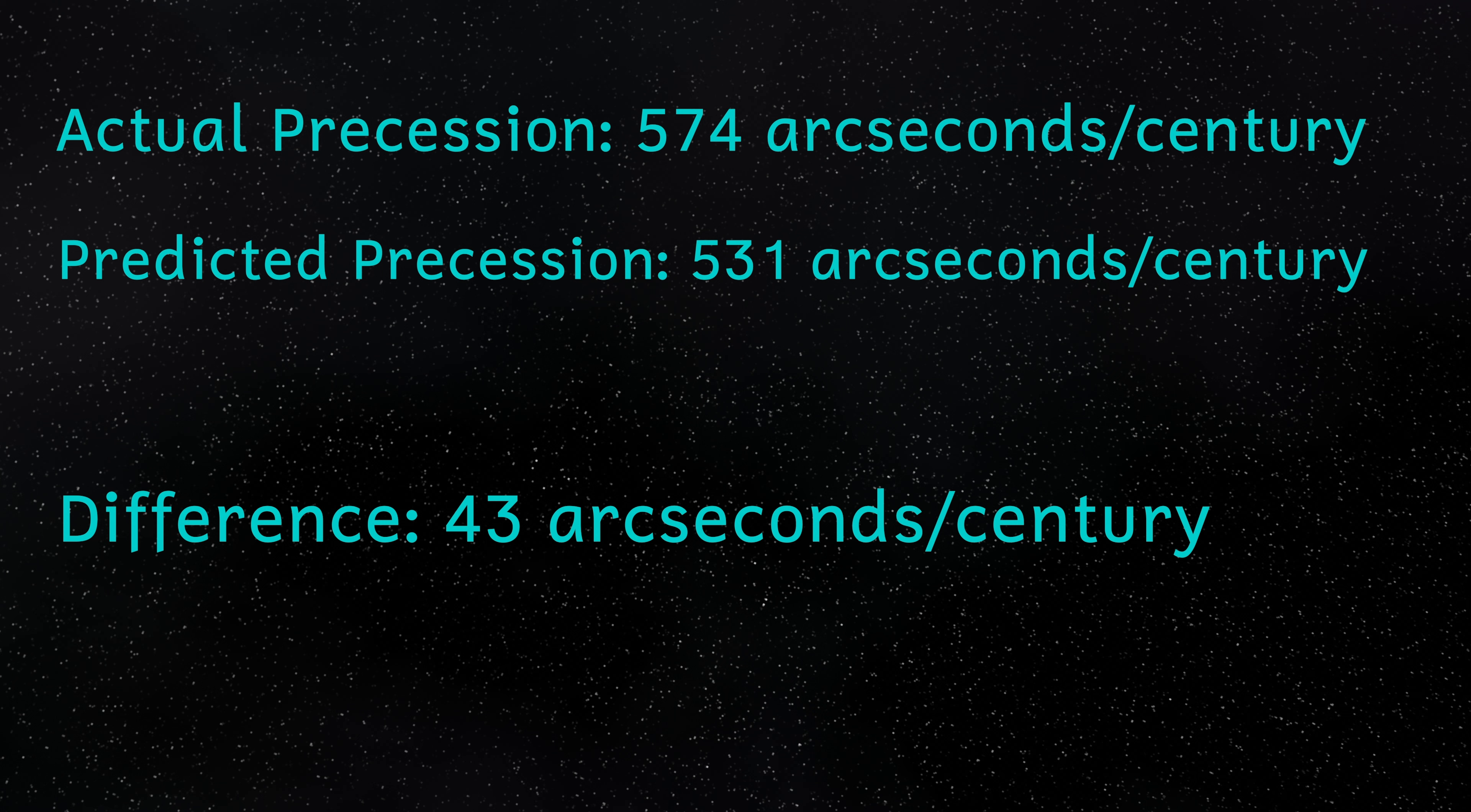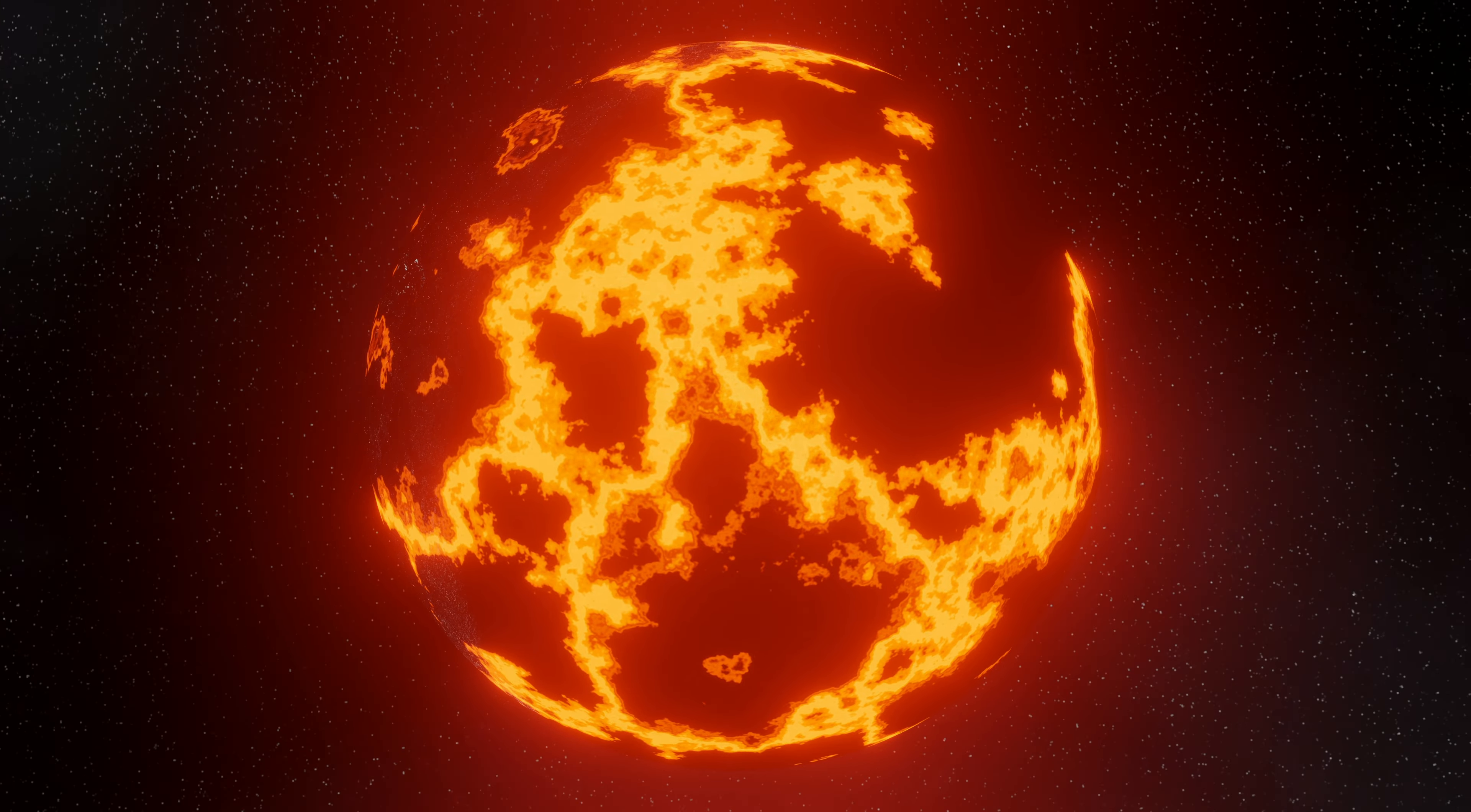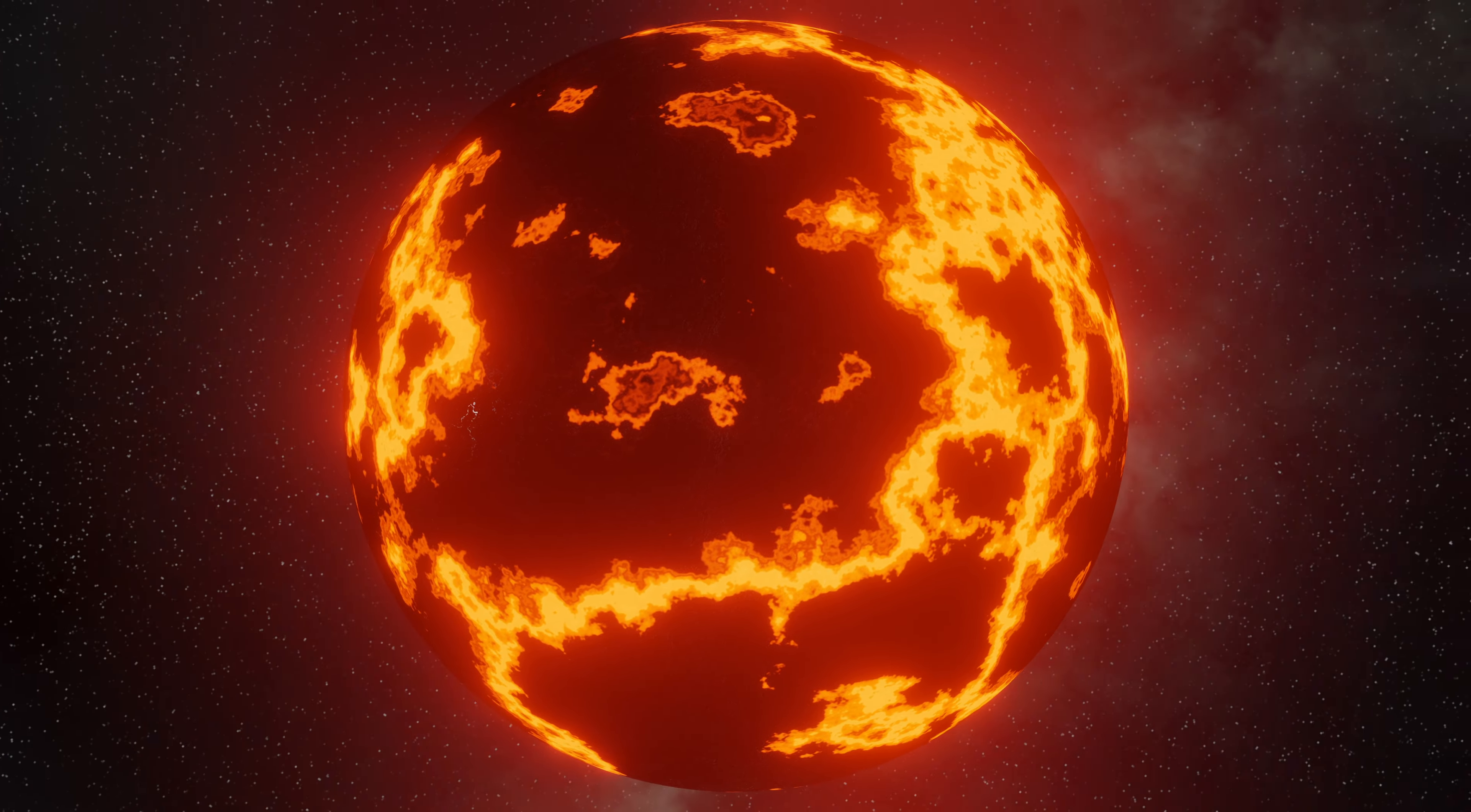Now that might not seem like a lot, but the discrepancies should be very close to zero. A number of different fixes were suggested for this discrepancy, including dust lying between the Sun and Mercury, and even an extra planet closer to the Sun affecting the orbit of Mercury. This planet was even given a name, Vulcan.